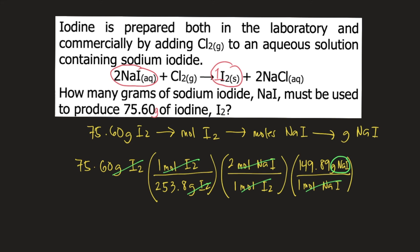So if we solve the entire thing, the answer would be equal to 89.30 grams of sodium iodide. So 89.30 grams is the answer to this question.